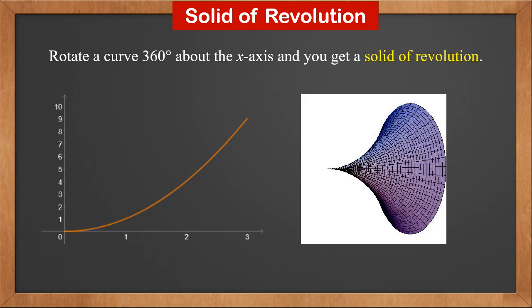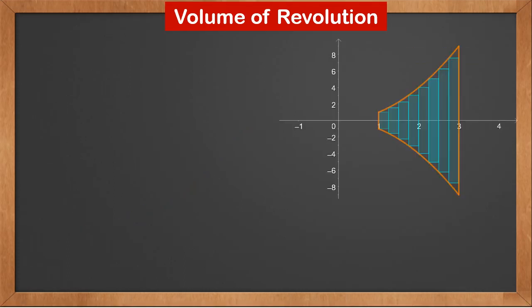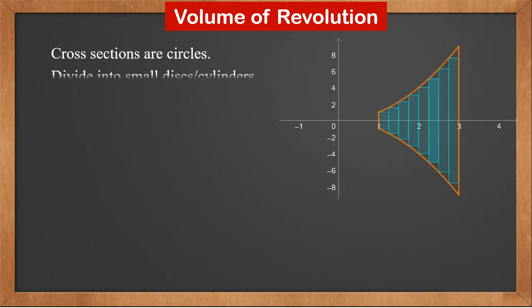We'll learn how to calculate its volume next. This is the side view of the solid of revolution when y equals x squared from 1 to 3 rotates 360 degrees about the x-axis. The cross sections are circles, so we divide the solid of revolution into small disks or cylinders along the x-axis.